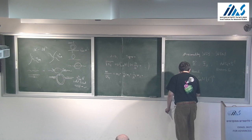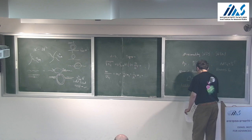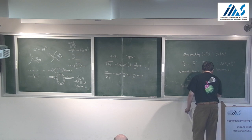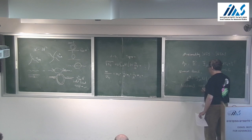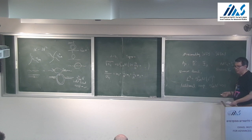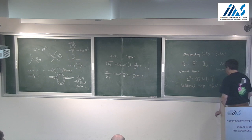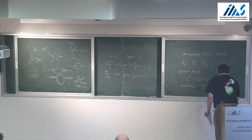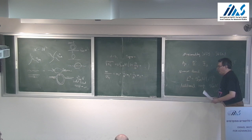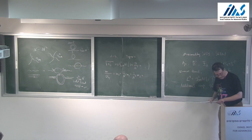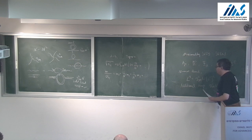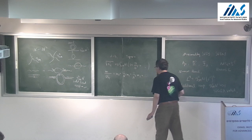There is an additional serendipitous simplification: when g_{YM}² N ≫ 1, the full string theory on AdS₅ × S⁵ can be approximated by supergravity. This supergravity approximation makes the dramatic prediction that all unprotected operators have scaling dimensions that grow with the coupling.